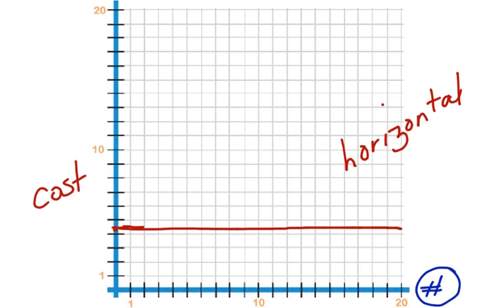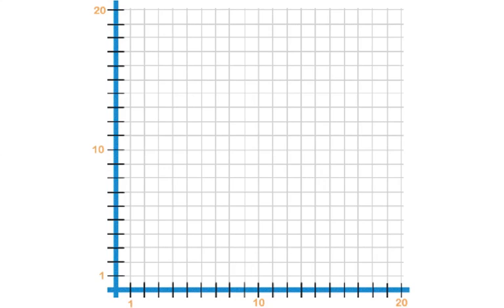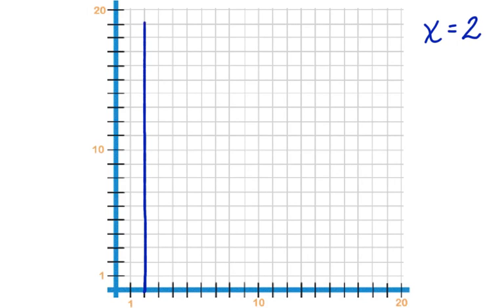When would you have a vertical line? Let's say the X value didn't change — let's say our X value was always going to be 2, but our Y value would change. So if our X value was 2, it would stay here. Then the Y value would change — it would go up and up and up. Then we would have a vertical line.